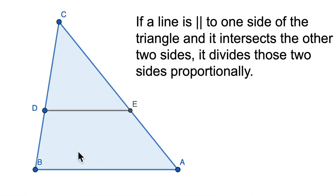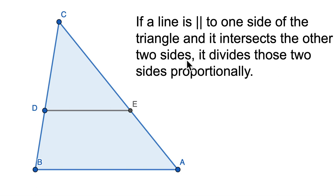Here's the first theorem. Let's just read it together. You might write this diagram down. It's saying that you have a line, and it's parallel — this is the parallel symbol — to one side of the triangle, and it intersects the other two sides. Then it divides those two sides proportionally.